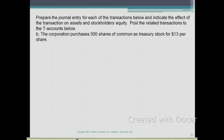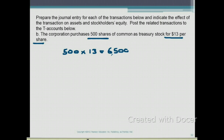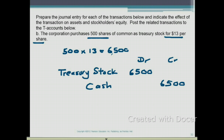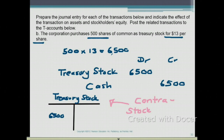Requirement B: The corporation purchases 500 shares of common stock as treasury stock for $13 per share. Treasury stock is recorded at cost. 500 shares times $13 equals $6,500. We debit treasury stock $6,500 and credit cash $6,500 since cash decreased. Remember, treasury stock is a contra stockholders' equity account with a normal debit balance.